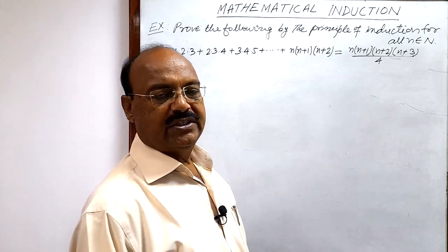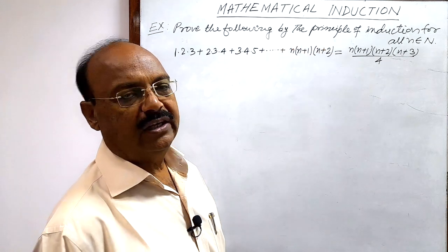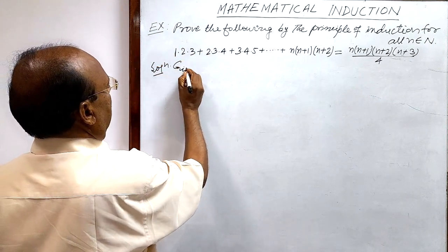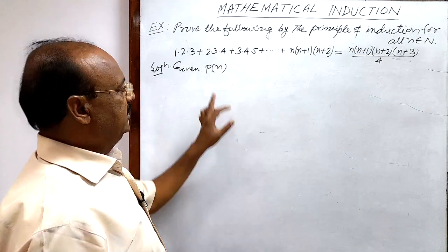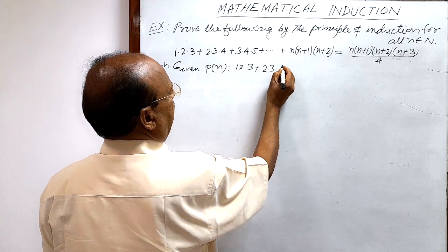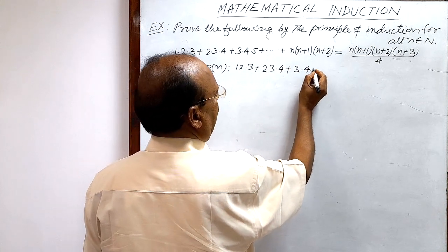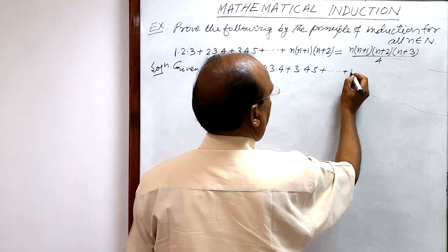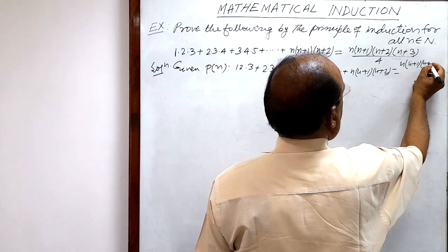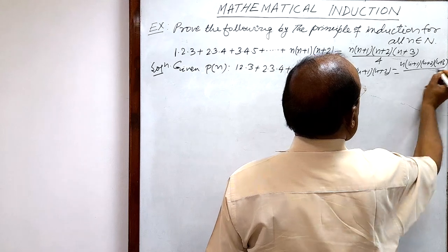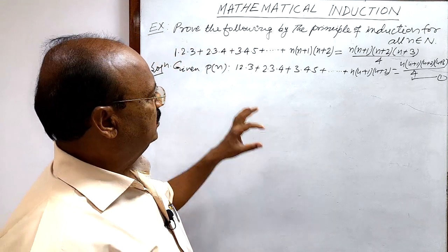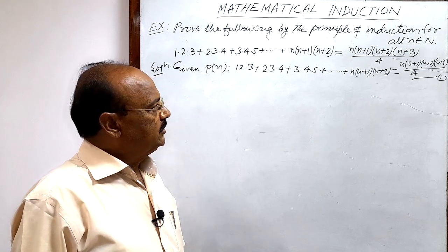This is the mathematical statement which is given, and we have to establish that LHS and RHS are equal. The mathematical statement is denoted by P(N): 1·2·3 + 2·3·4 + 3·4·5 + ... + n(n+1)(n+2) = n(n+1)(n+2)(n+3) / 4. Suppose this is relation number 1. We will now use the principle of mathematical induction for solving this type of problem.